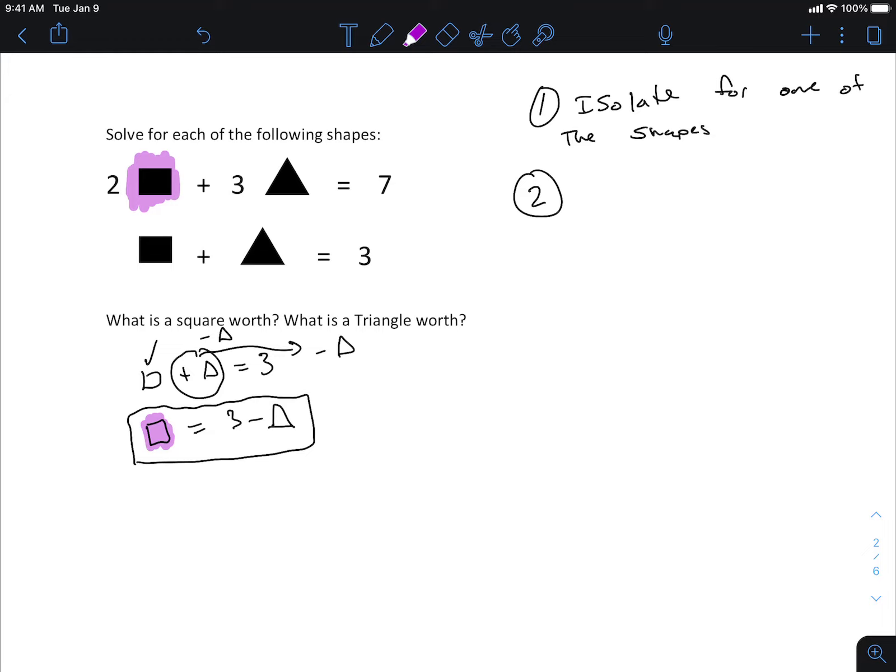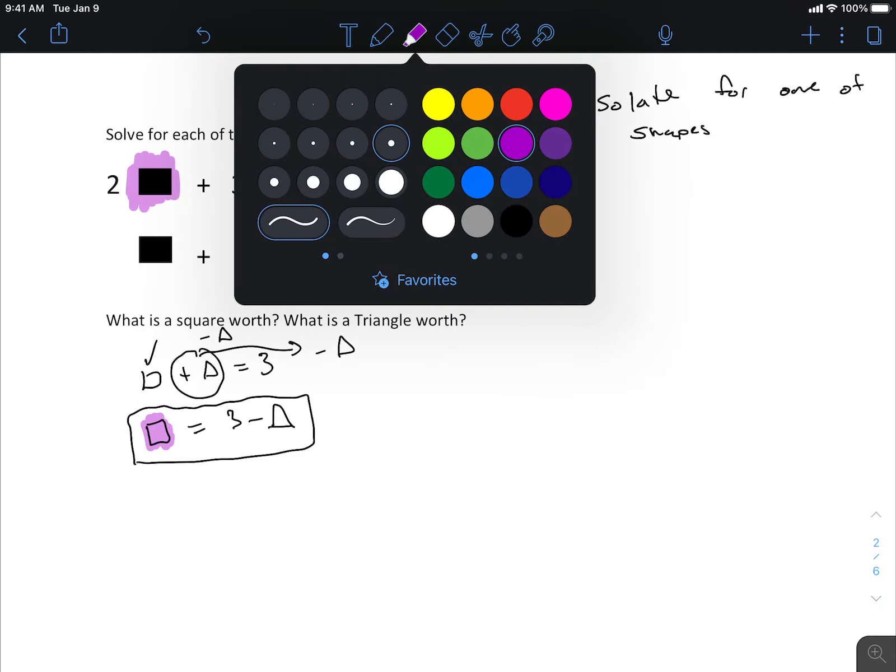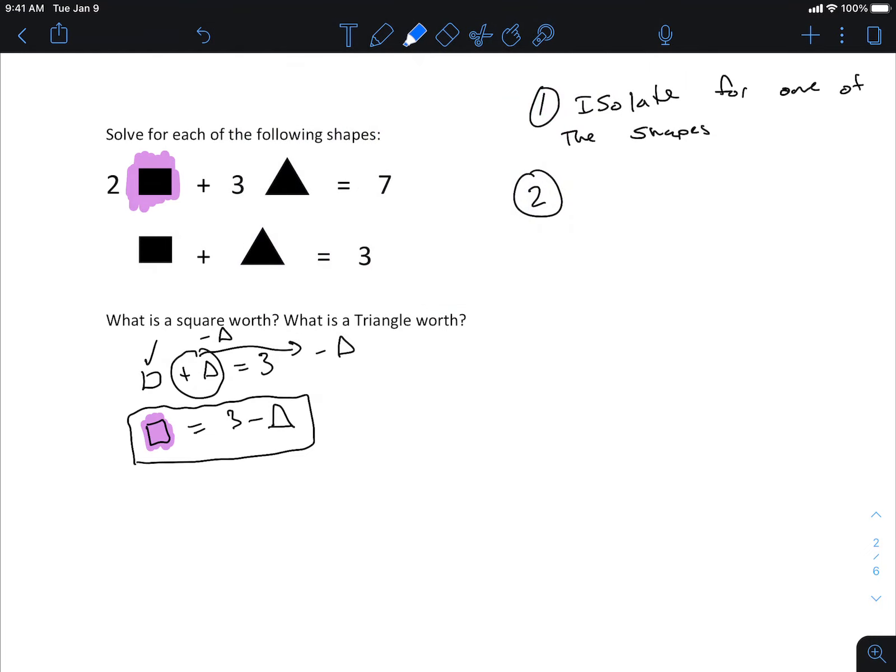And we could plug it in there. So I see a square there. What is the square worth? We just found what the square was worth. It was 3 minus triangle. Ian, if the Wi-Fi is not good right now, you don't have to worry about it. I'll upload it, and then when the Wi-Fi is better, you can watch it again. Just like you've been here, that's all that matters. You don't have to burn through your data. I'll upload it.